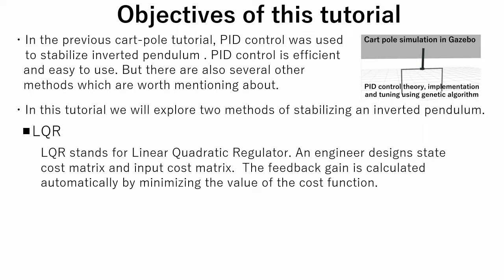An engineer designs state cost matrix and input cost matrix. The feedback gain is calculated automatically by minimizing the value of the cost function.